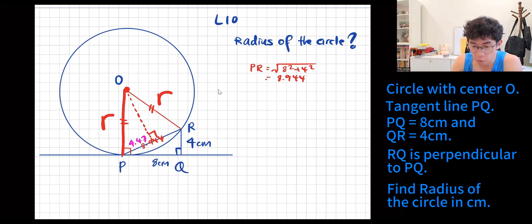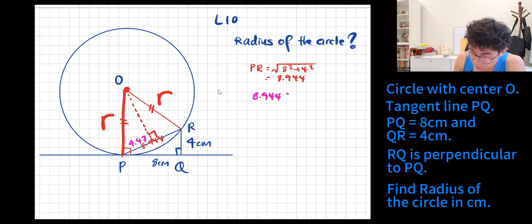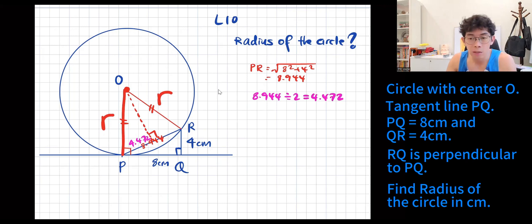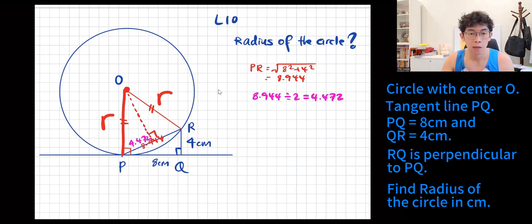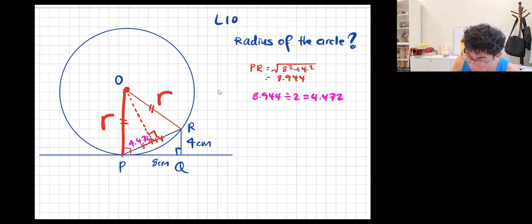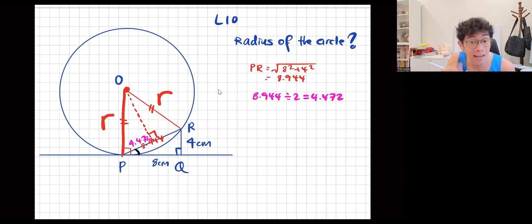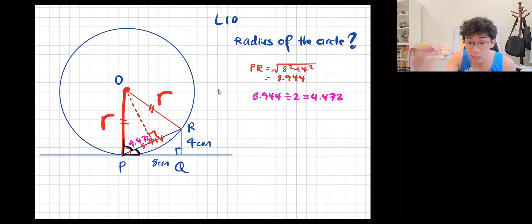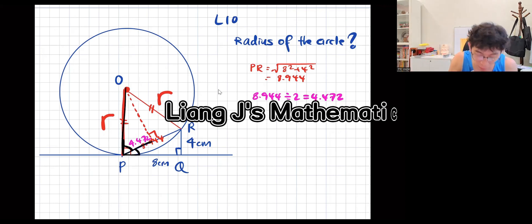8.944 divide by 2 — you get 4.472. The reason I do that: because I drew that line already, I formed a lot of triangles, and you have the radius there. So how do I lead to that answer? Look at the sine — I'm going to work out this angle, then use my 90 degree to work out the other angle. Then I can solve, because I have my length and my angle — so I can solve my radius.